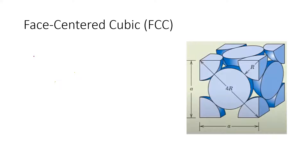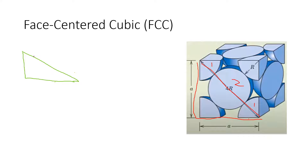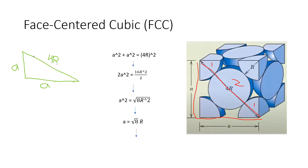To derive the relationship between lattice parameter length and atomic radius for FCC, we look at the front face of the unit cell. Looking at the face diagonal, it is composed of four radii: one at each corner atom and two in the middle. Using the Pythagorean theorem on the right triangle formed, a² + a² = (4r)², which gives us a = 2√2·r.